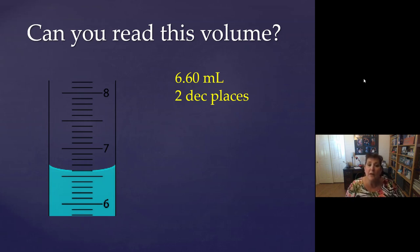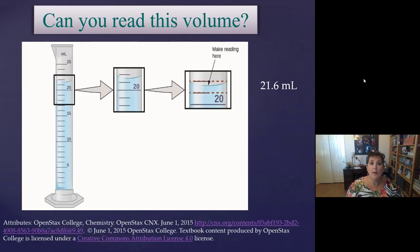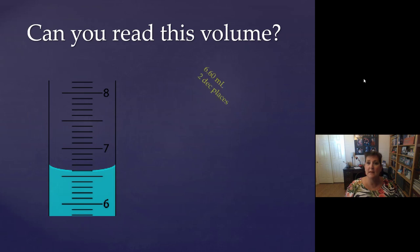So for a 10 milliliter graduated cylinder, we get two decimal places out of the reading because we have the 0.12345 lines. So we know that for sure. So it's the hundredth place that is our estimate. Compare that to the 25 milliliter cylinder. It doesn't have 0.1, 0.2, 0.3, 0.4. It just is marked in 21, 22. We don't have the points marked. That's why it only gets one decimal place. So a 25 milliliter graduated cylinder gets one decimal place. A 10 milliliter graduated cylinder gets two decimal places.